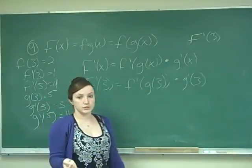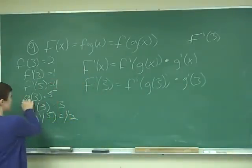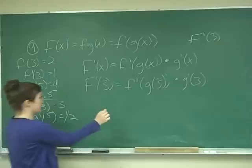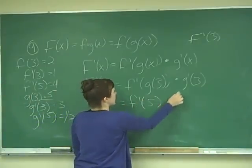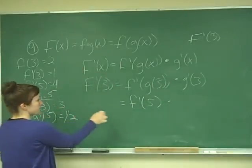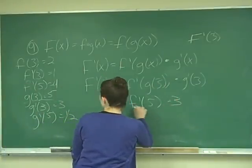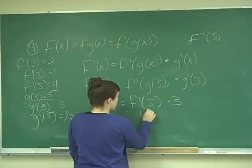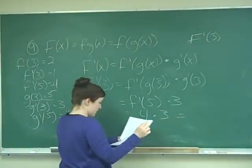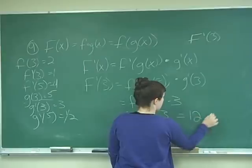Well, g of 3, and so now we can just fill it in. g of 3, according to the list of information they give us, is 5. So this is going to be f prime of 5 times g prime of 3 is 3 times 3. And now we just need to go look up what f prime of 5 is. It's 4, so we have 4 times 3, and that will be equal to 12.